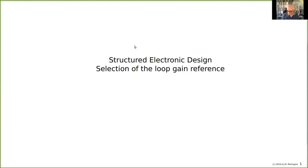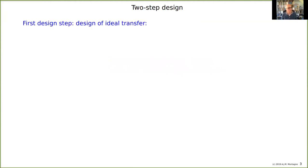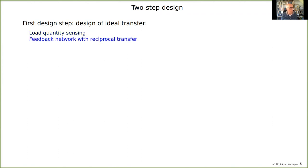Selection of the lubricant reference turns out to be important, otherwise the model is not meaningful. The first step is to have the design of the ideal transfer — that is the feedback network and the nullor. We sense the load quantity that we want to have, we create a copy of the source quantity with a feedback network, so the feedback network has the reciprocal transfer of the transmission parameter you want to fix. Then we compare it with the source quantity and nullify the error with a nullor.